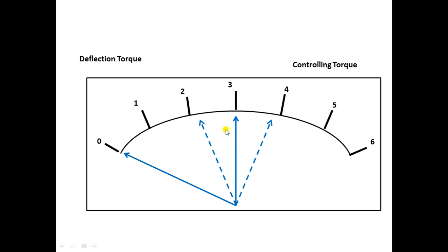The pointer keeps oscillating forward and backward, making it difficult for the experimenter to take a reading — they would be confused whether the reading is 2.3, 2.5, 3, 3.1, or 3.5. To reduce this oscillation and bring the pointer to the equilibrium position, a damping system is present in the instrument. It provides a damping torque that reduces the number of oscillations so the pointer finally settles at the correct position.